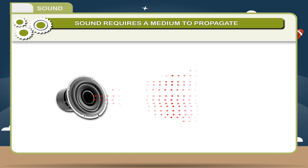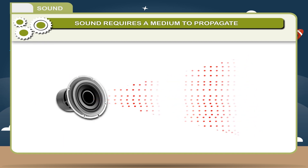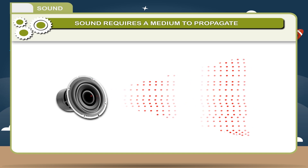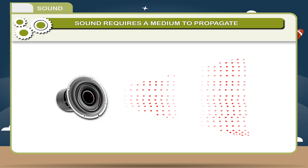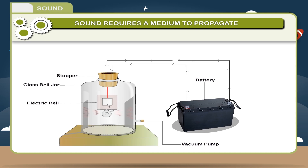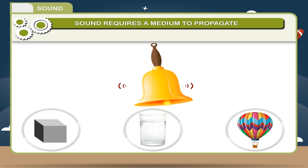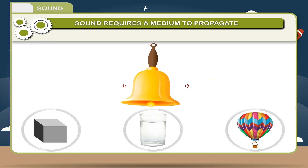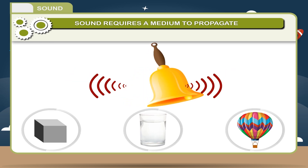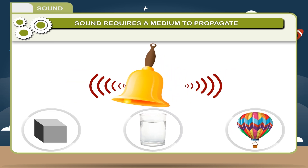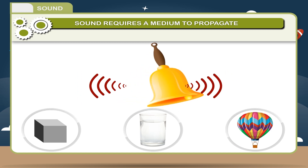Hence, we can conclude that the air particles were acting as a medium and they were helping the movement of sound energy. When vacuum was created, the sound could not travel from inside the jar to outside. Hence, we can say that some kind of medium — solid, liquid, or gas — is necessary for the propagation of sound.